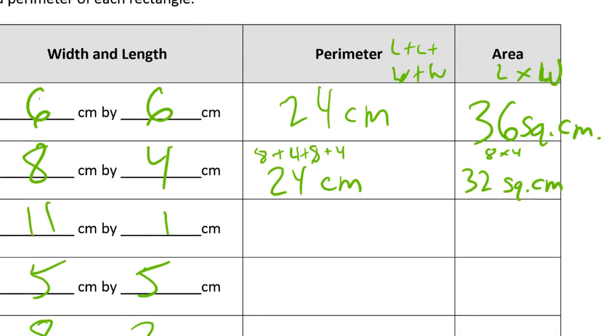11 by 1, so that's 11 plus 1 plus 11 plus 1. So 2 elevens is 22, and then 2 ones is 2, so 2 more is 24. And 11 times 1 is 11 square centimeters.